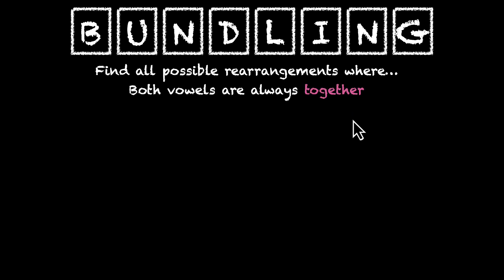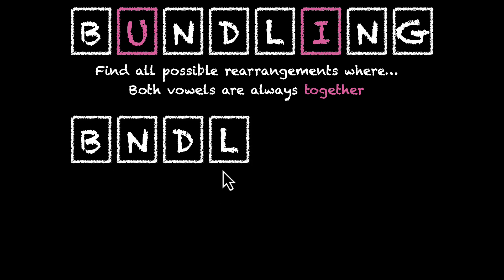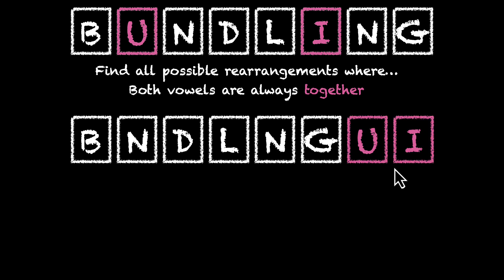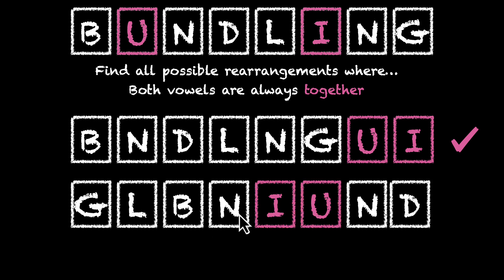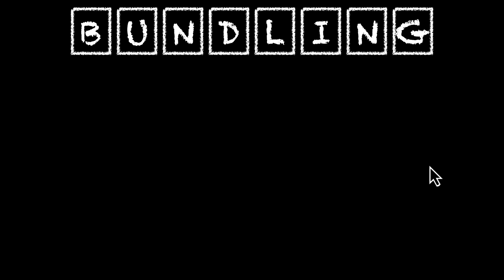It's a special type of constraint. We have two vowels, U and I, and we want both of them to be always together. Here's an example: B-N-D-L-N-G-U-I. This rearrangement works for us because U and I are together. Here's one more — here U is sitting next to I, and here I is sitting next to U. So both of them work for us. Now before we learn how to do this, why don't you pause the video and try it out yourself.